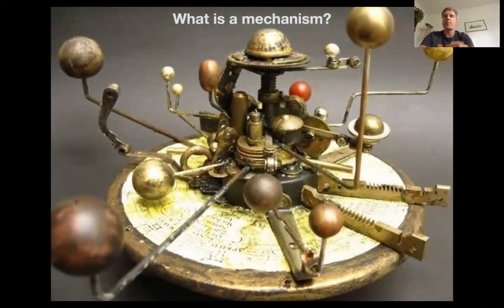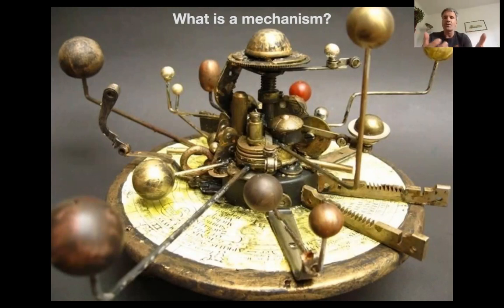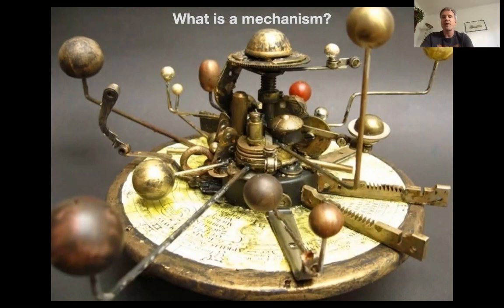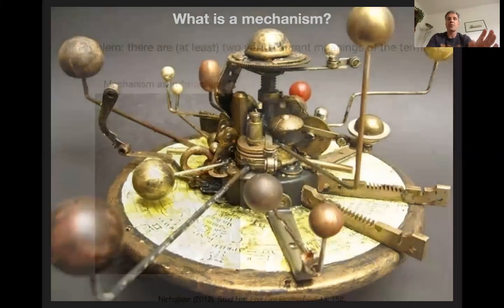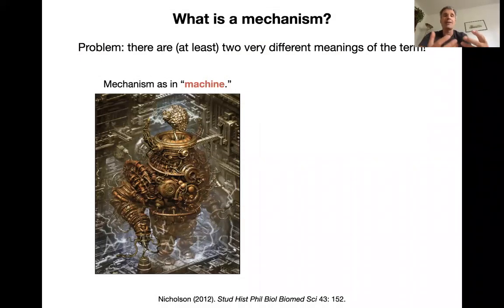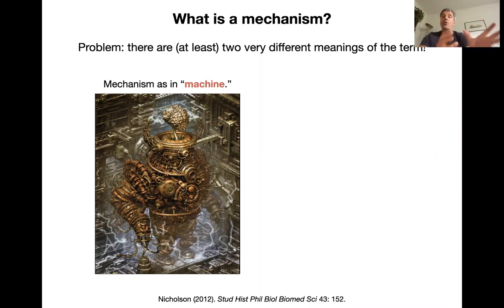That seems much more promising as a form of explanation in biology. But we have to ask again: what is a mechanism? It's been haunting us throughout the lecture. The problem is, as with many concepts in biology, 'mechanism' has many different meanings — at least two very different ones we have to look at. One meaning, which I'm slightly allergic to, is mechanism as a machine.